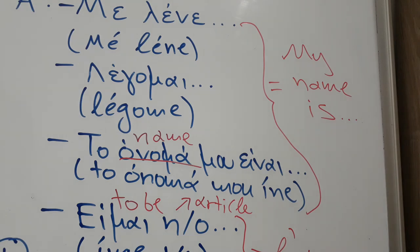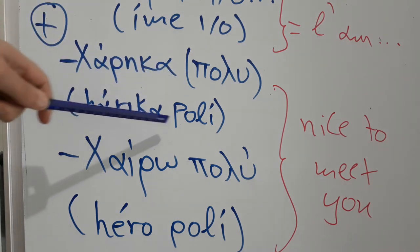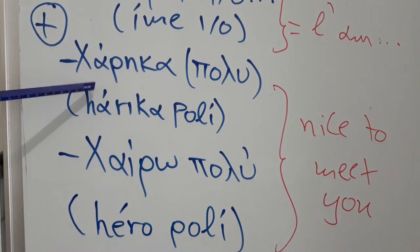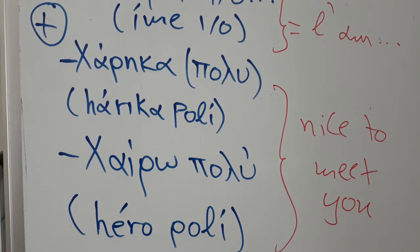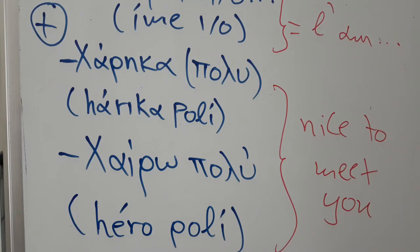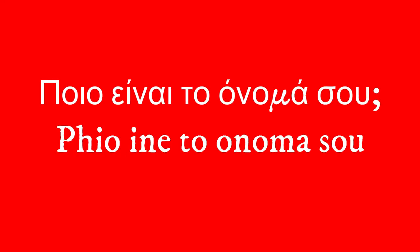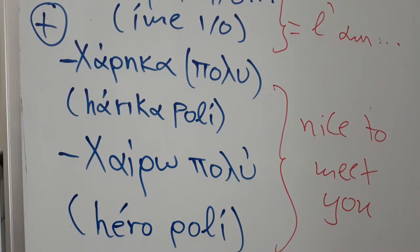To these ways of answering we can add something more to be more polite. We can use χάρηκα πολύ, or without πολύ just χάρηκα, or χαίρω πολύ — all these mean nice to meet you. For example, listen to a hypothetical conversation: Πώς λέγεσαι? — Λέγομαι Χρυσάνθη. Χάρηκα πολύ. — What's your name? My name is Χρυσάνθη. Nice to meet you. — Ποιο είναι το όνομά σου? — Το όνομά μου είναι Χρυσάνθη. Χαίρω πολύ. — My name is Χρυσάνθη. Nice to meet you.